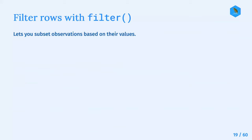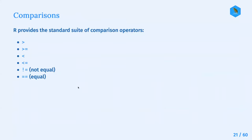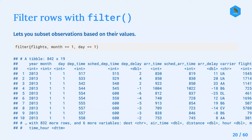Filtering rows with filter lets you subset observations based on their values. For example, with the flights dataset, we can filter by two additional arguments: month equal to one, and day equal to one.